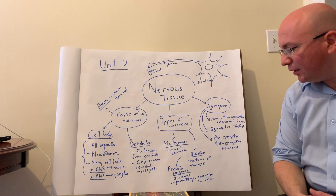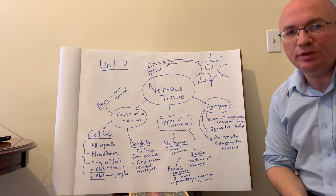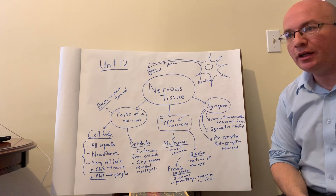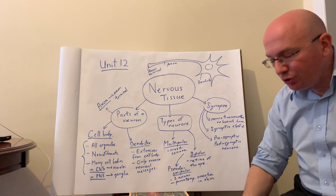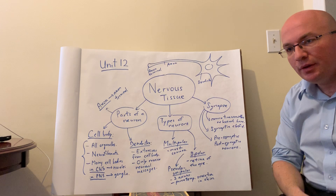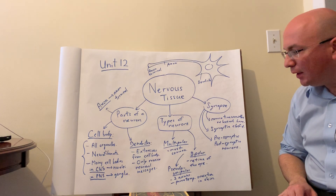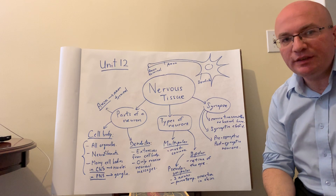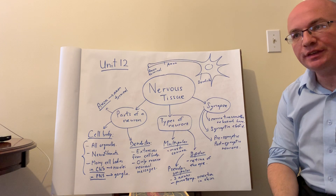Any neurotransmitter released by a neuron has very specific receptors. Each neurotransmitter has multiple different receptors designated for it in the brain and other parts of the body. The neuron that releases the neurotransmitter is called the presynaptic neuron, and the one that picks up the neurotransmitter through its receptors is the postsynaptic neuron. We also want to talk about what kind of support cells exist to help the nervous system function.